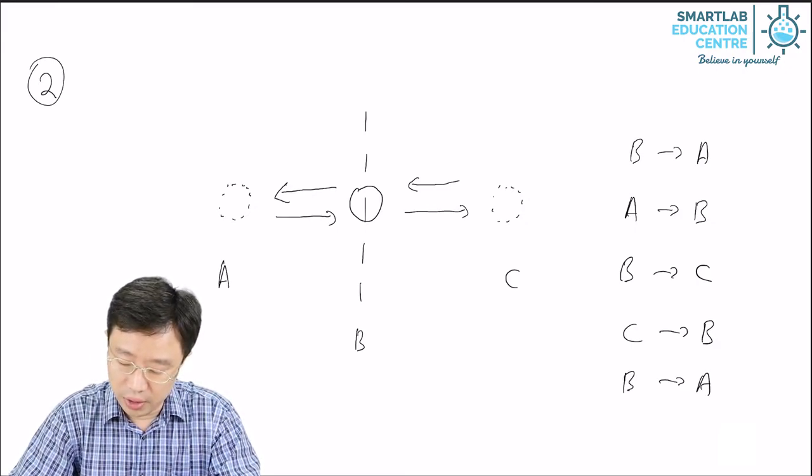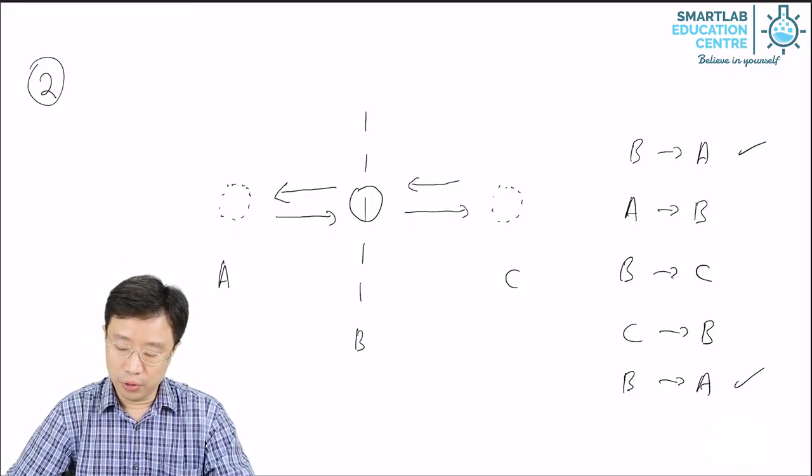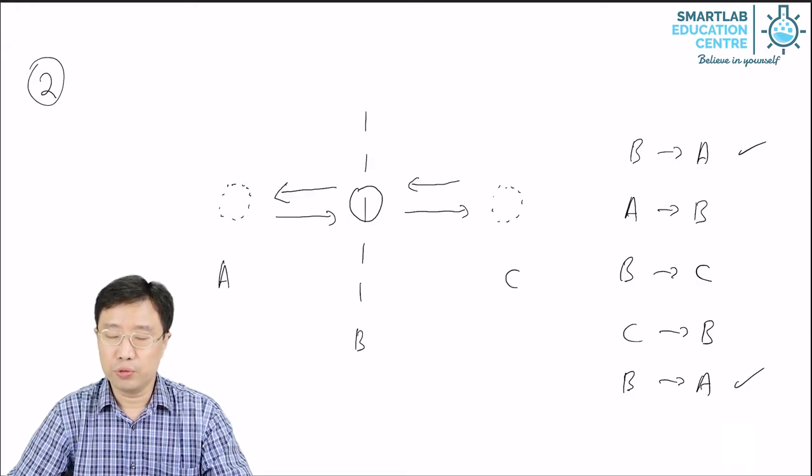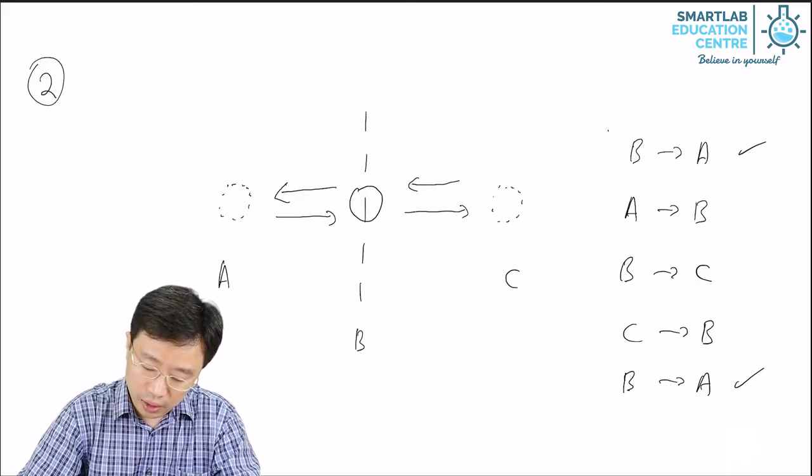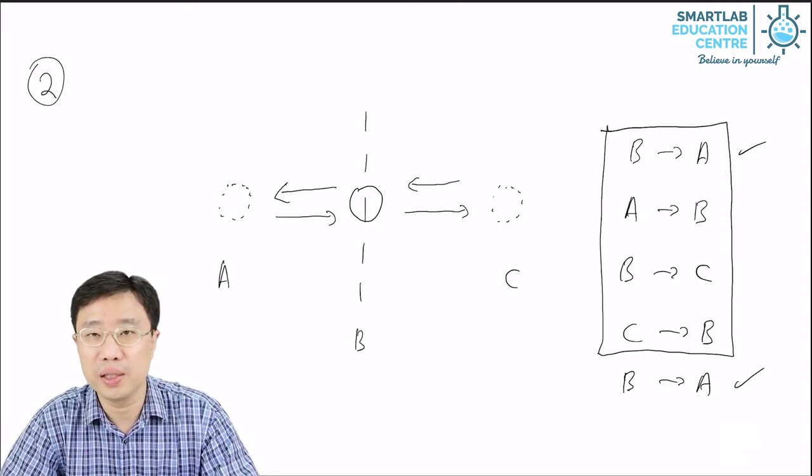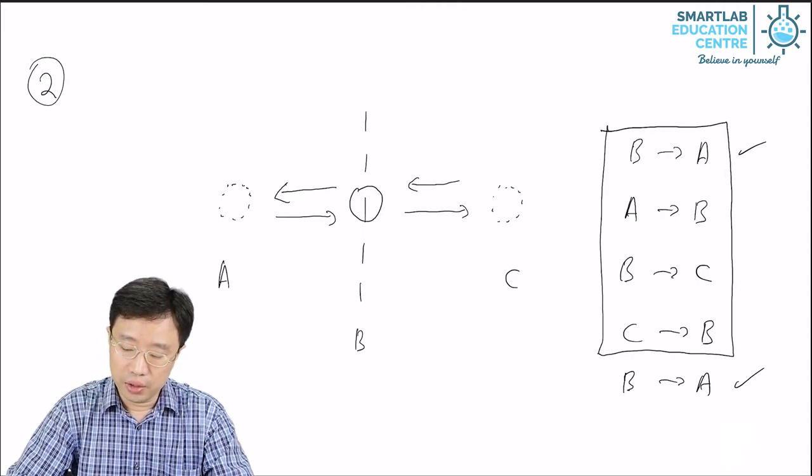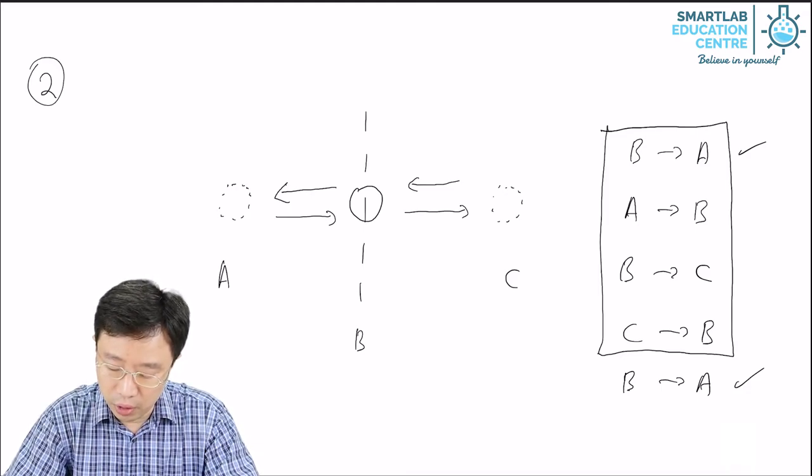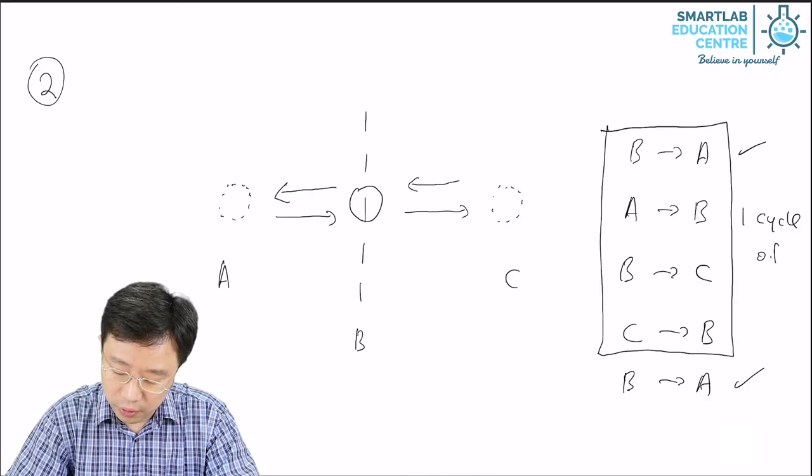You can see that this and this are the same. If you continue to write down the movement of the particle as it vibrates, you will discover that these four movements are repeated again and again. These four movements form what we call one cycle of vibration.